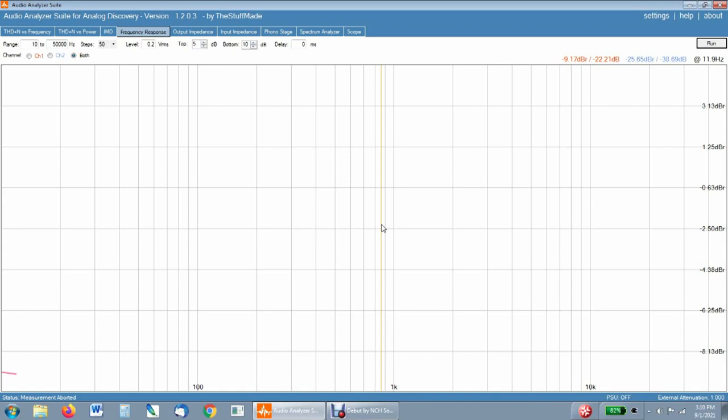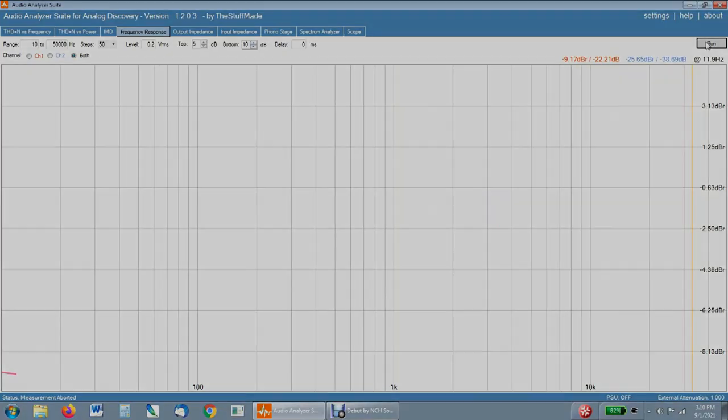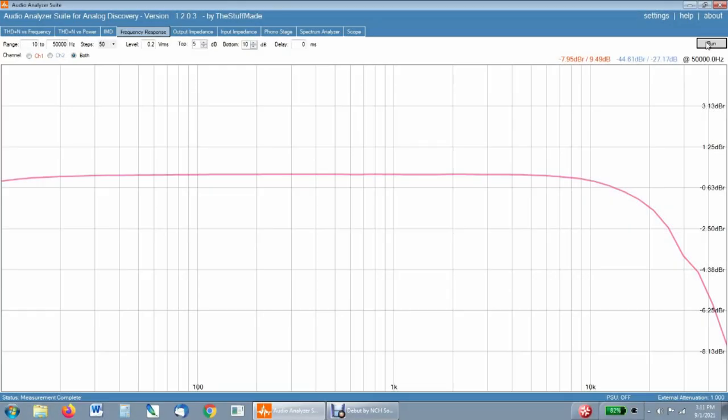We soldered in a 0.22 UF coupling cap and let's see what that does to our frequency response curve. We're seeing a slight bit of roll-off down here below 20 hertz, still not what I'd consider really rolling off. I'd like to listen to the amp before I start lowering that coupling capacitor anymore because we're really trying to fix the base response, and I don't want to do anything that's going to limit the bass the amp can put out. So I'm going to stop right here.